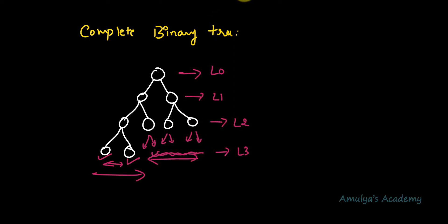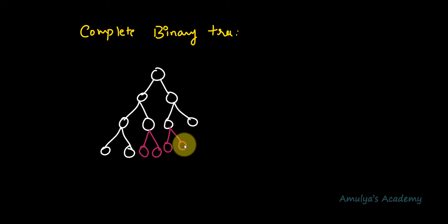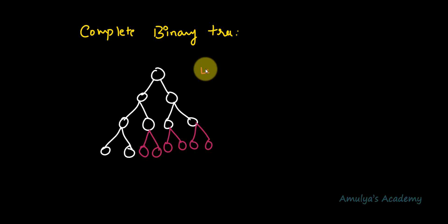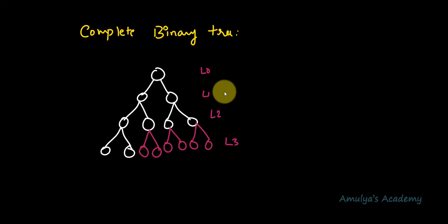Let's add nodes to completely fill the last level. Now level 0 is completely filled, level 1 is completely filled, level 2 is completely filled, and level 3 has every node with 2 children — it is also completely filled. So this is also a complete binary tree.